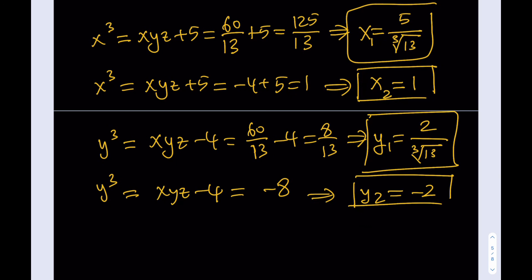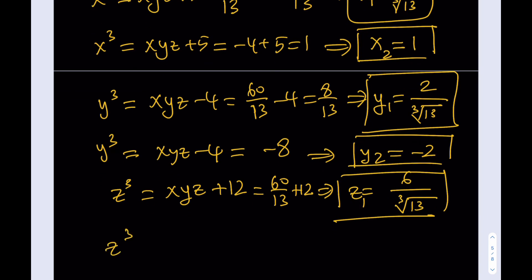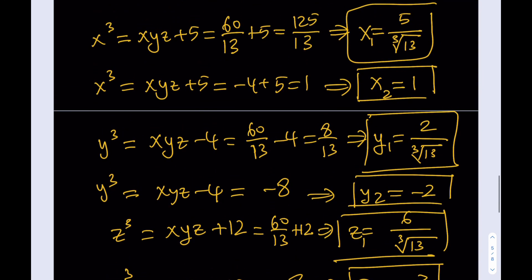Finally, z cubed equals xyz plus 12. Using xyz equals 60 over 13: z cubed equals 60/13 plus 12 equals 216 over 13, and the cube root of 216 is 6, so z₁ equals 6 over the cube root of 13. Using xyz equals negative 4: z cubed equals 8, so z₂ equals 2. Those are all our x, y, z values, and we are done solving the system.